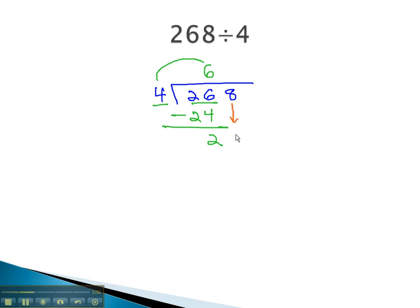Usually, at this point, we will bring down the next number, 8, and repeat the process again, this time dividing the 28 by the 4. 4 divides into 28, 7 times.